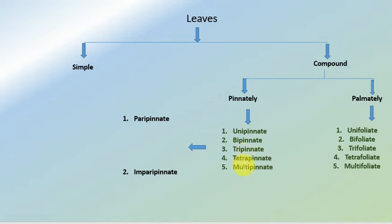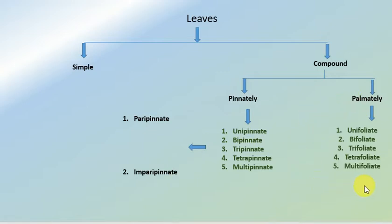The subtypes of the pinnately compound leaf are: unipinnate, bipinnate, tripinnate, tetrapinnate, and multipinnate. These five subtypes can further be categorized into paripinnate and imparipinnate compound leaf. The palmately compound leaf is also divided into five subtypes: unifoliate, bifoliate, trifoliate, tetrafoliate, and multifoliate. This is just the outline of leaf classification; we will now study each type in detail.